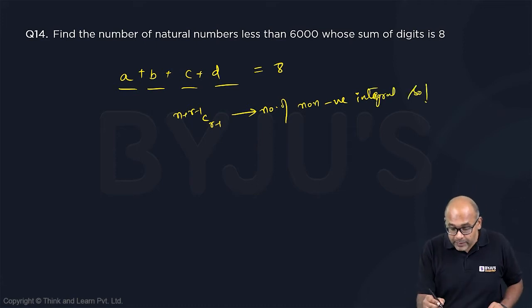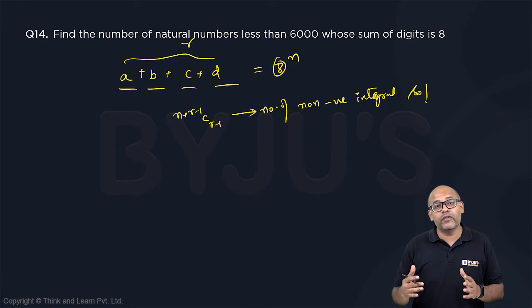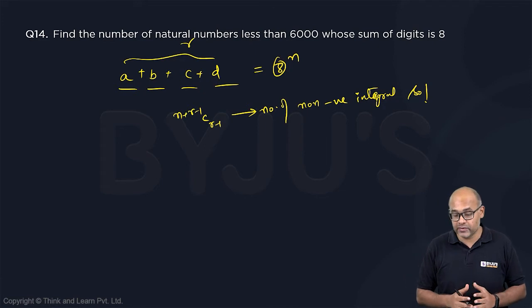What does it mean? It means this is r and this is n. So if you are having r things adding up to n then the number of ways in which these r things can be having different values is n plus r minus 1 C r minus 1.